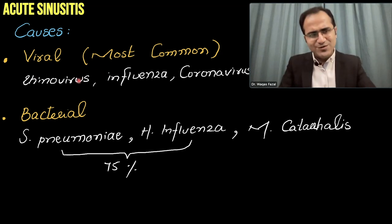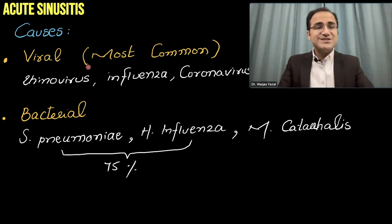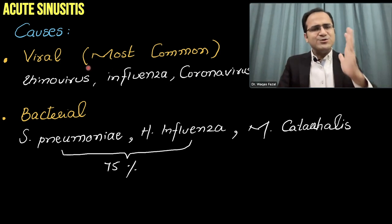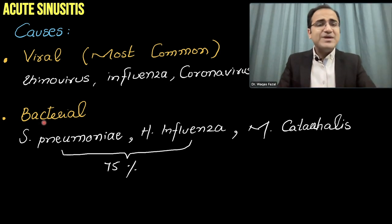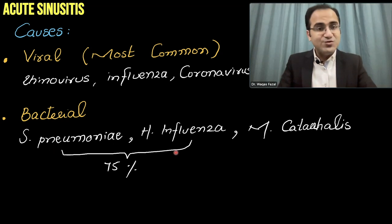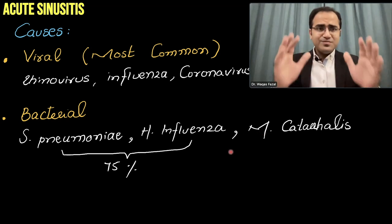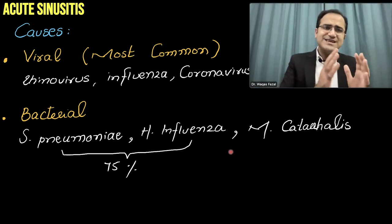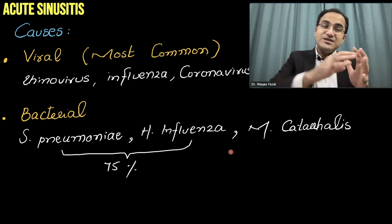Viral causes are the most common cause of acute sinusitis and include rhinovirus, influenza virus, and these days coronavirus. Most cases are actually viral. After that, bacteria can also cause acute sinusitis, and they include Strep pneumo and H. influenza in 75% of cases, followed by M. catarrhalis.